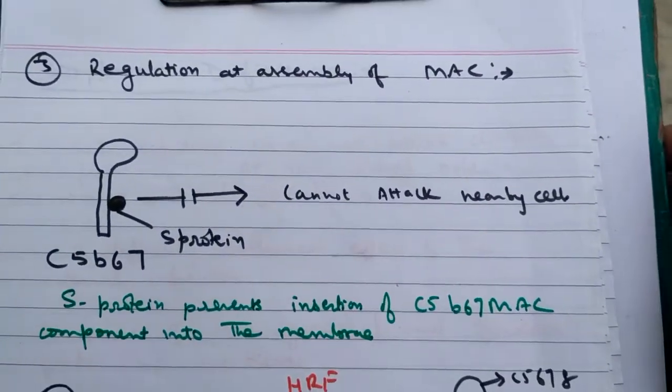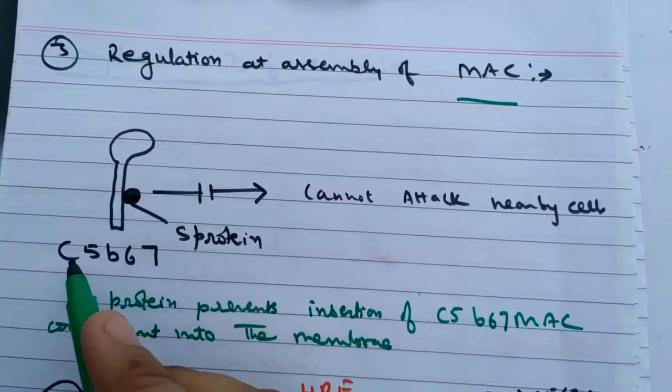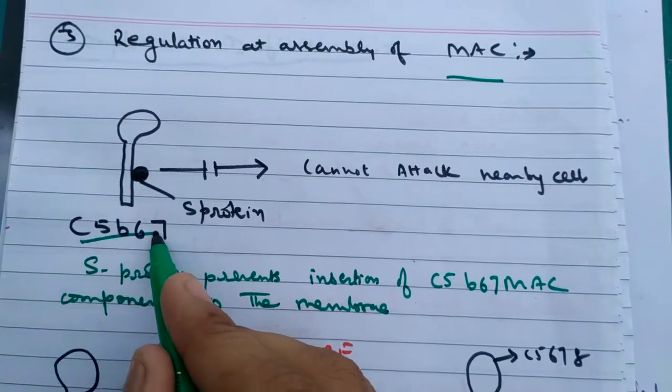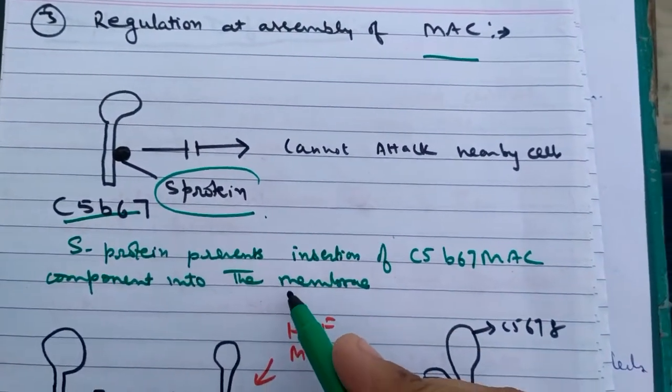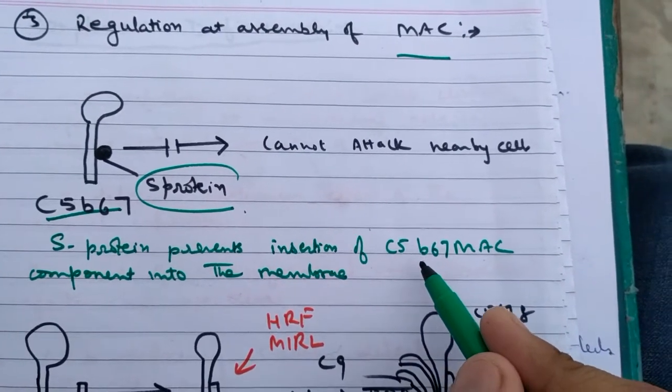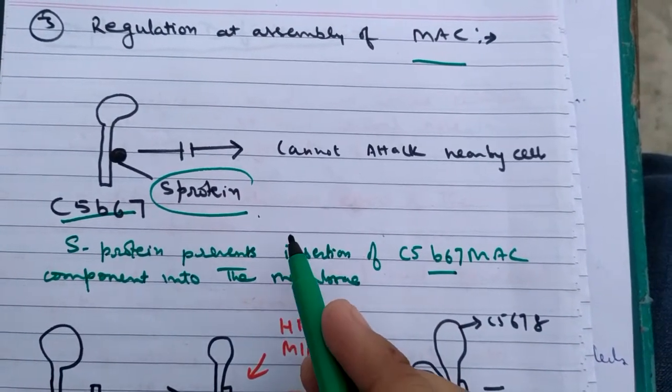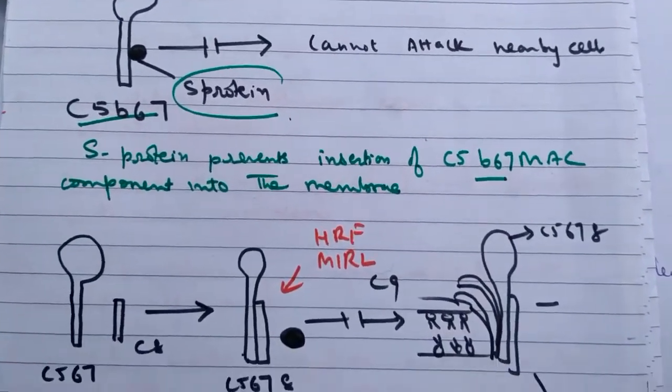Third type of regulation is at the MAC level. This is the C5B67 complex. Here is a protein, that is the S protein. When it is inserted with C5B67, it further prevents binding and formation of the MAC.